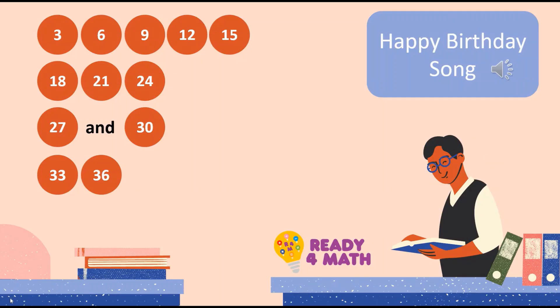To help you memorize the multiplication table of 3, we will be singing a song to the tune of the Happy Birthday song. Let's listen to the music so we can be familiar with the tune and the numbers used in skip counting by 3: 3, 6, 9, 12, 15, 18, 21, 24, 27, and 30, 33, 36.